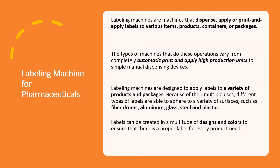Labeling machines are designed to apply labels to a variety of products and packages. Because of their multiple uses, different types of labels are adhered to a variety of surfaces like aluminum, glass, steel, and plastic. For example, ophthalmic solutions come in different kinds of PET bottles, and we also have glass vials and glass ampules. For different sorts of containers, we have different types of labeling machines.